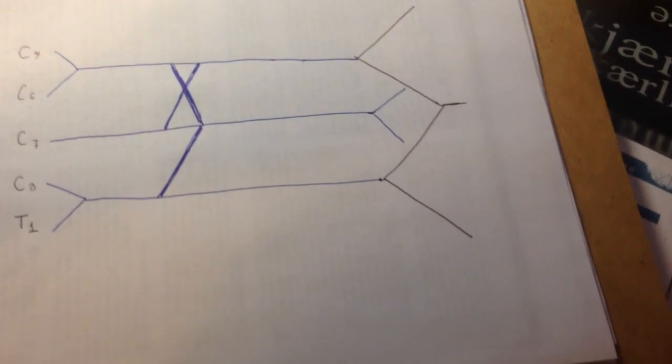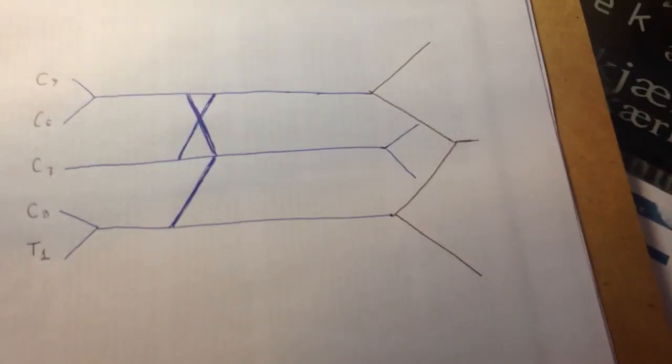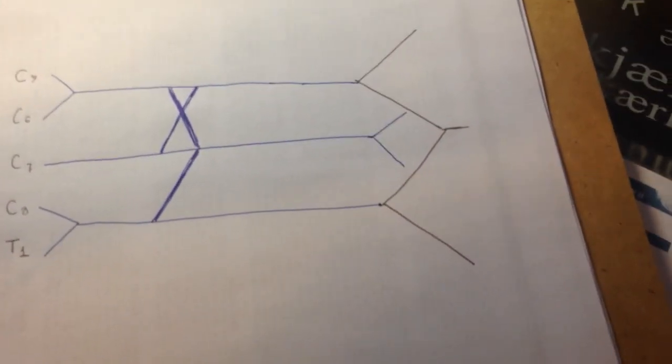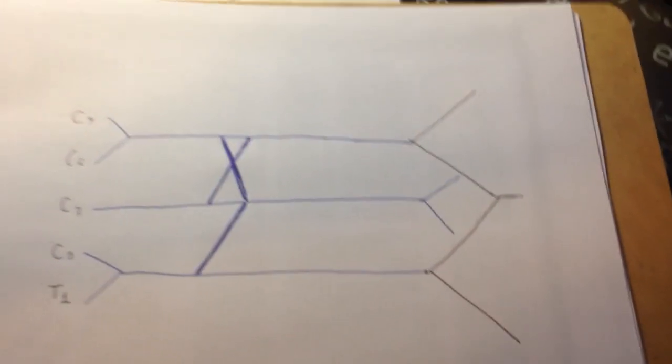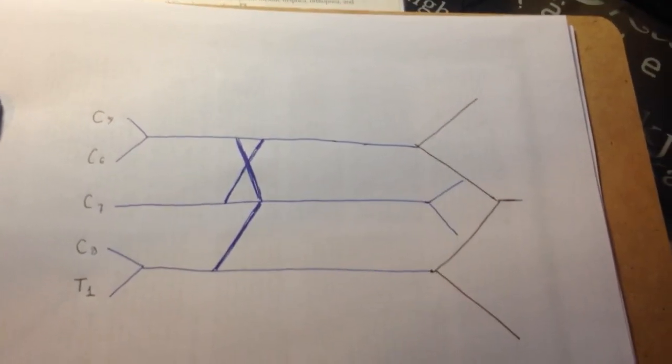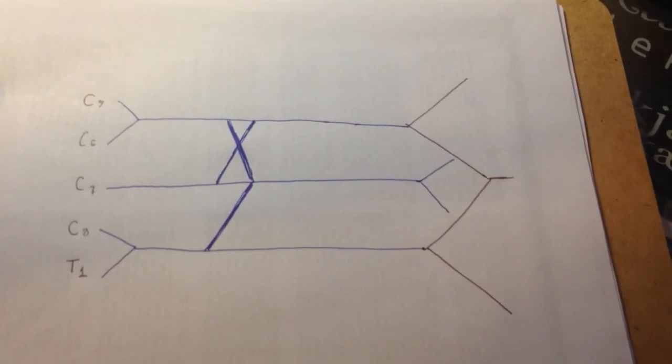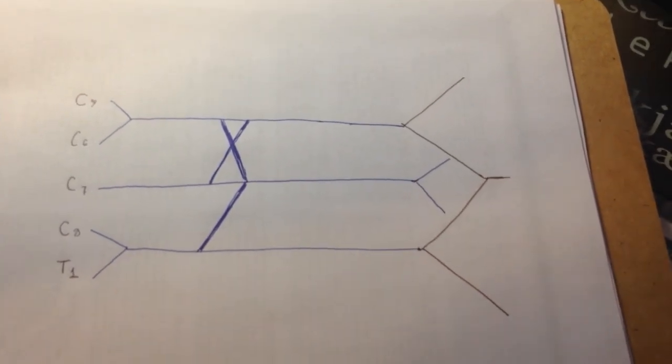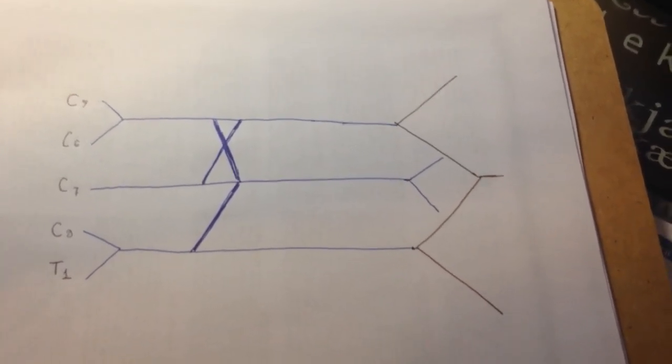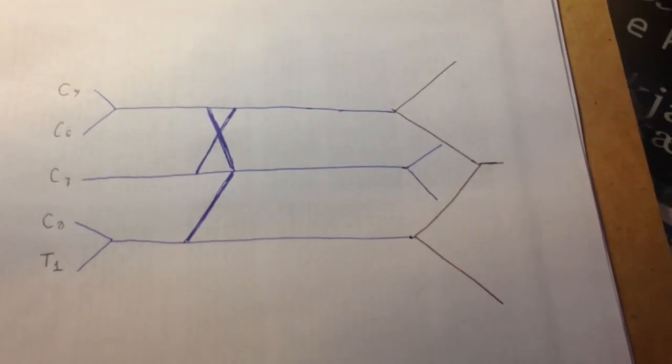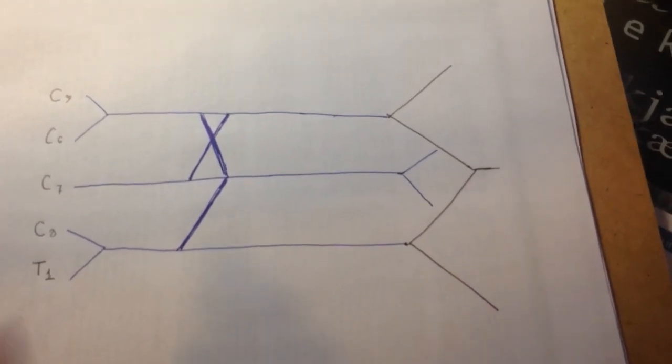After that, we are going to add the nomenclature of the brachial plexus. So, first of all, we're going to name the roots and the cords. I mean, the trunks and the cords. The trunks and the cords, we're going to name them.